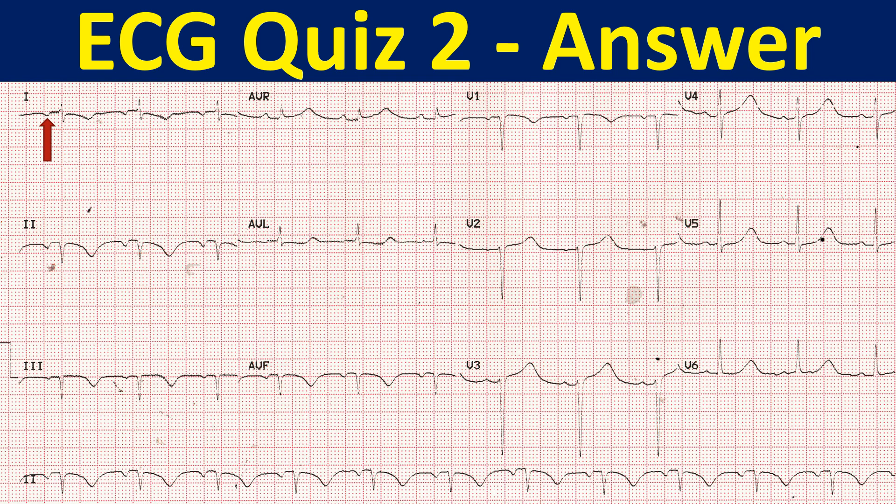Lead 1 shows inverted P waves, which in the absence of features of dextrocardia in the chest leads — i.e., regression of amplitude of QRS complexes as you move from V1 to V6 — should make one suspect lead reversal. But this is not the common right arm-left arm lead reversal pattern when you look at the inferior leads.